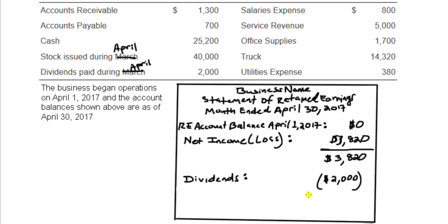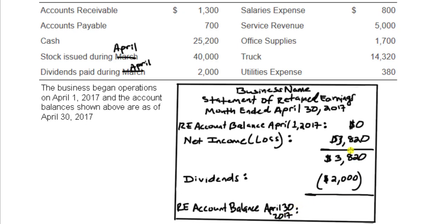Put brackets around it because it's negative. Your final line will be the retained earnings account balance — the new account balance as of the end of the period. Retained earnings account balance, April 30, 2017 is the total here: $3,820 minus $2,000 would be $1,820. For our next period's statement of retained earnings, we'll just carry over this balance to the top.